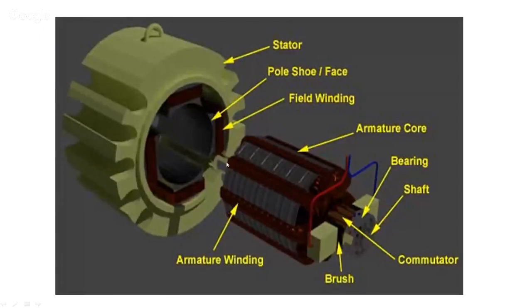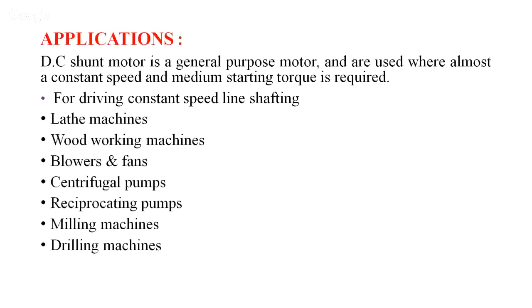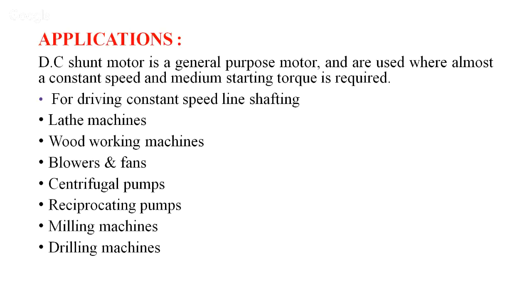Here is a picture of a shunt motor showing the stator, poles, pole shoes, field winding on the poles, armature core, armature winding, shaft, brushes, and commutator. DC shunt motors are general-purpose motors used where almost constant speed and medium starting torque are required. Applications include constant speed line shafting, woodworking machines, blowers and fans, centrifugal pumps, reciprocating pumps, milling machines, and drilling machines. It gives an almost constant speed.